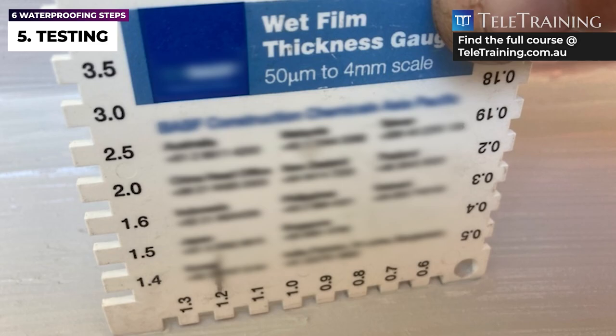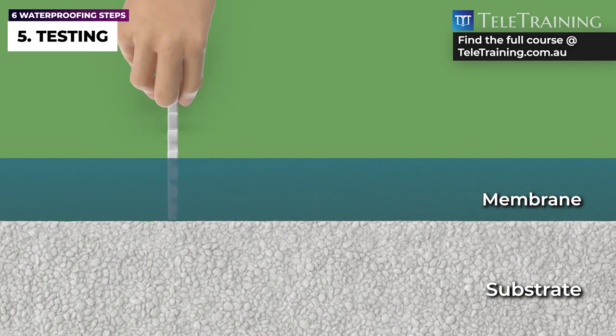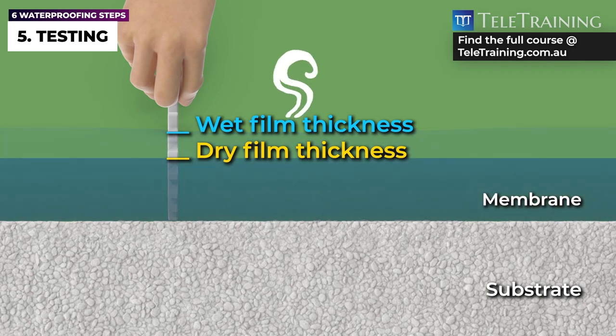For example, the wet film thickness is used to measure the uncured liquid membrane thickness during the application. This is a critical test, since most liquid membranes have lower dry film thickness compared to wet film thickness once water or solvent inside the membrane has evaporated.